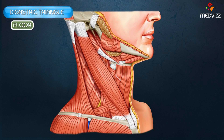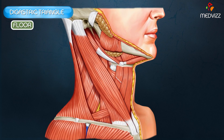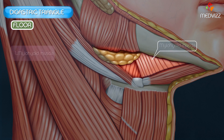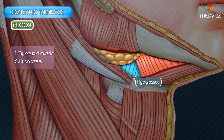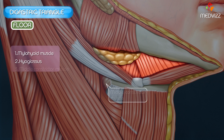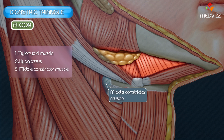The floor is formed by the mylohyoid muscle anteriorly and by the hyoglossus muscle posteriorly, and a small part of the middle constrictor muscle of the pharynx also appears in the floor.